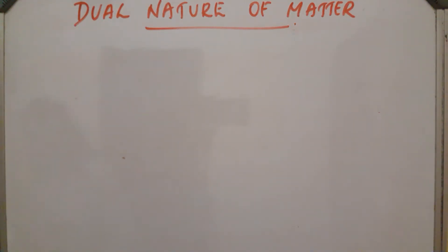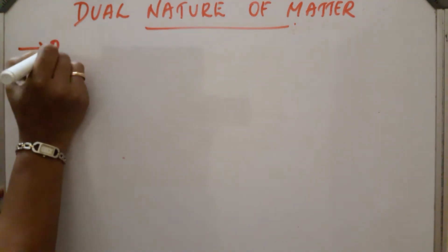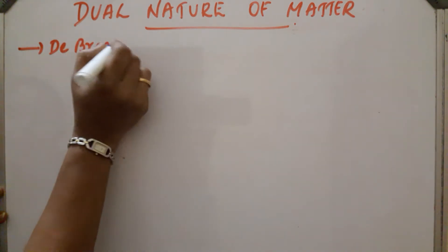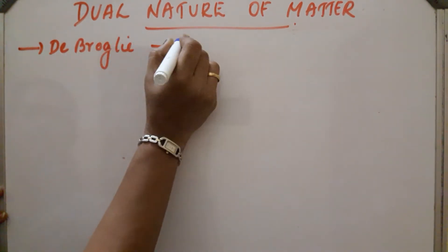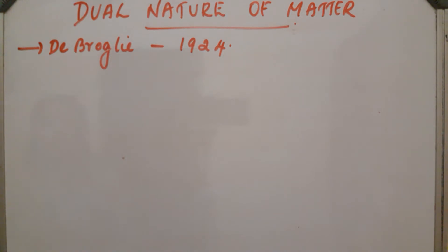Dual nature of matter. Due to the drawbacks of the Bohr model, a new idea was put forward by de Broglie and Heisenberg about the nature of subatomic particles such as electrons. Dual nature of matter was proposed by Louis de Broglie in the year 1924. He suggested that just as light, all moving particles also possess dual character.